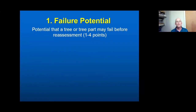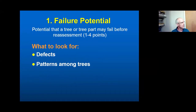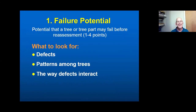Failure potential is rated on a one-to-four scale. What we're looking for first and foremost is defects — things that clue you in that the tree might be defective. In some cases we'll look for patterns among trees; root diseases, for example, occur in very definite pockets. We're also going to talk about the way defects interact primarily within a tree, and a little bit about how defects interact within a group of trees.